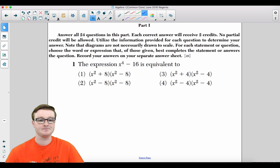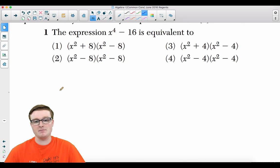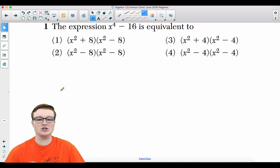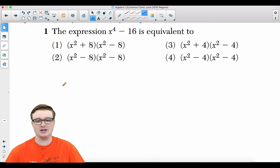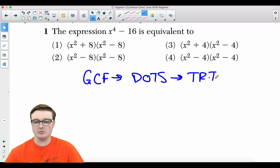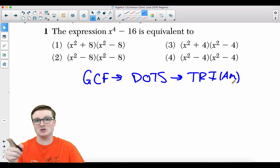Question number one. The expression x to the fourth minus 16 is equivalent to what? So this is just a basic factoring question, and you need to know the order of factoring like the back of your hand. The order of factoring is GCF followed by the difference of two perfect squares followed by the trinomial method. So is there a GCF here? No. Is it dots? Absolutely.